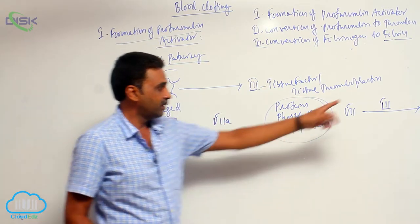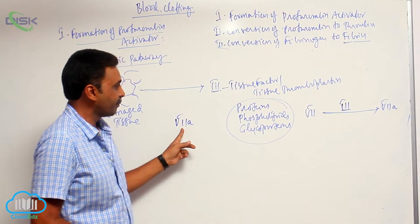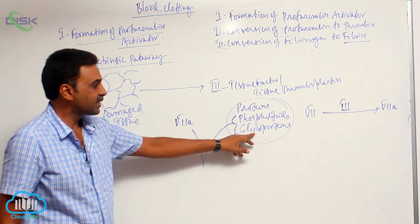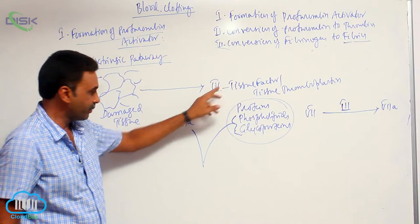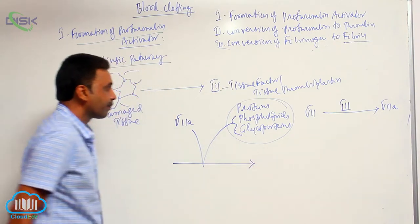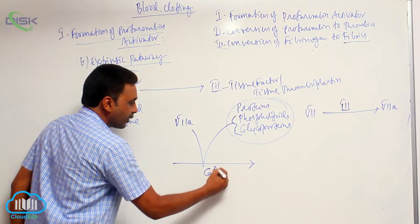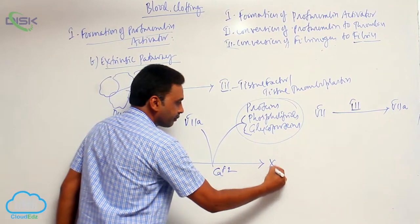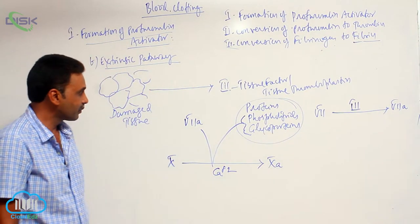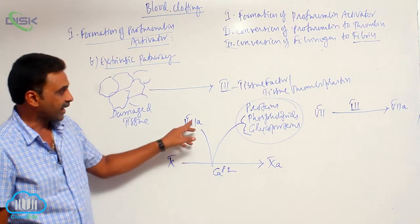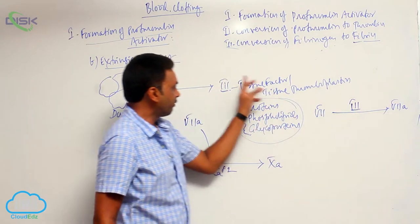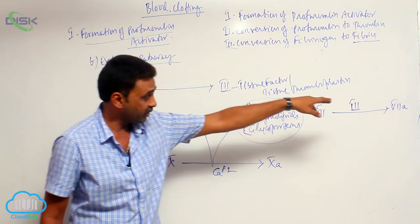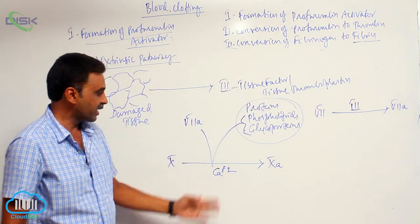The activated Factor VII, along with the phospholipids and glycoproteins present in Factor III, in the presence of calcium ions, will activate Factor X.